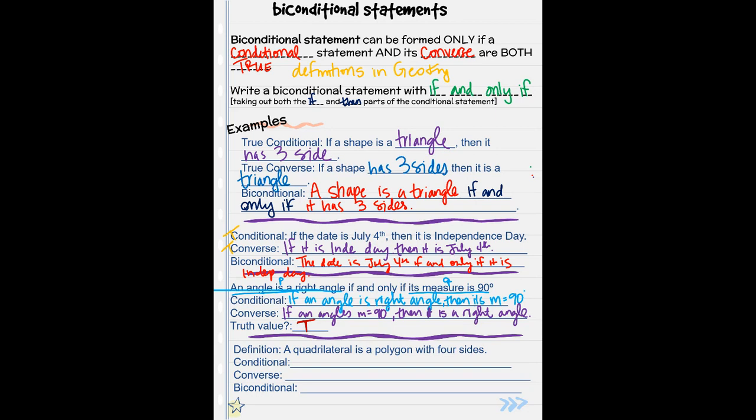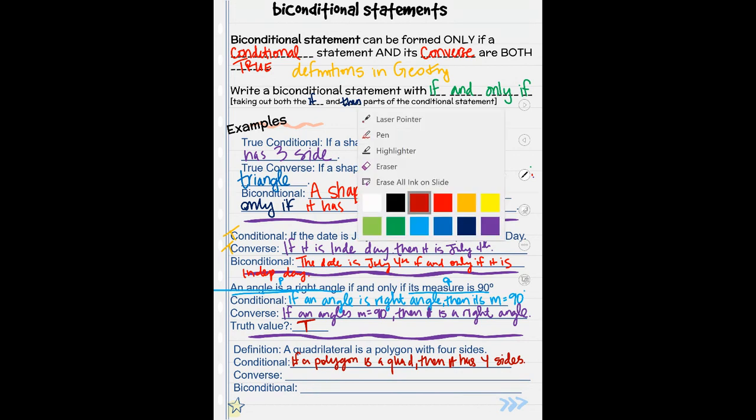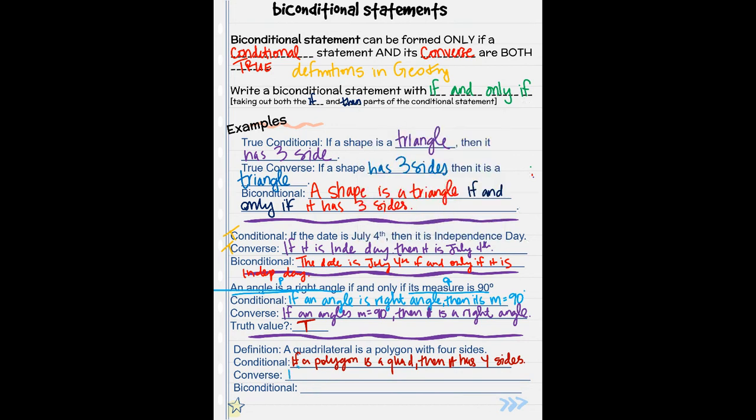A quadrilateral is a polygon with four sides. That's our definition. So let's write a conditional statement from that. If a polygon is a quadrilateral, then it has four sides. Switch them: if a polygon has four sides, then it is a quadrilateral.